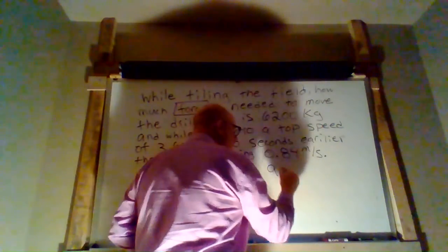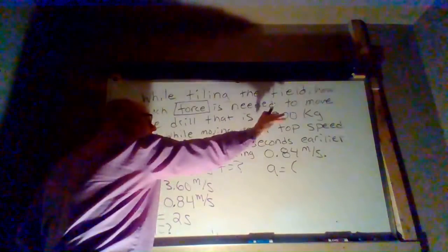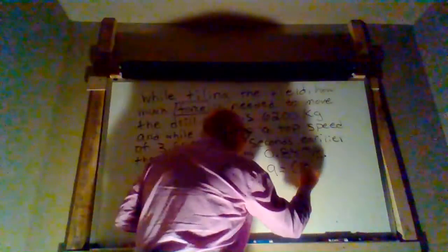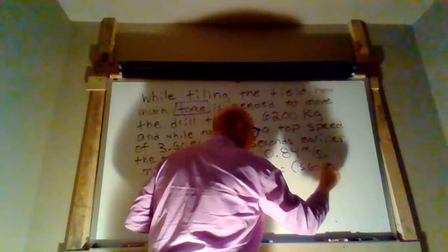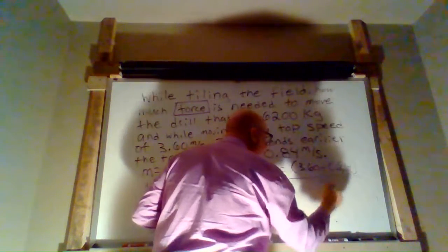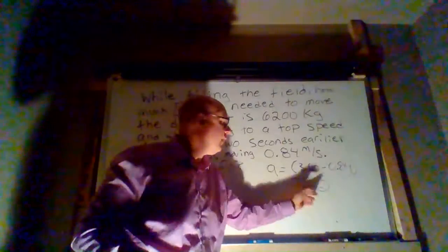Of course, we would say our acceleration equals what we have on top. We don't need to be looking up here. That's why we've got this information down here. 3.60 minus 0.84, and then that's all over 2. So subtract them, divide by 2, and then that will give you your acceleration.